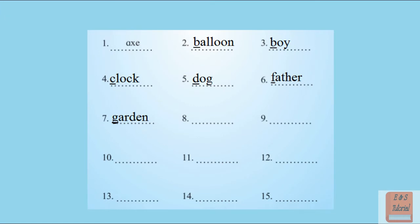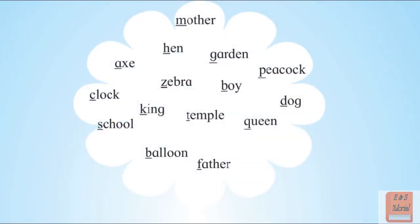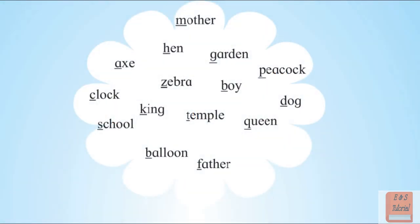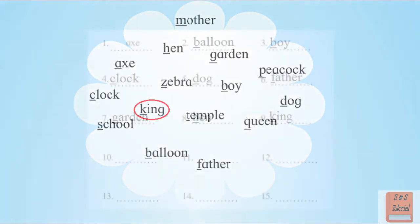After G, it's H. With H, the word that is given is hen. After H, we have I. There is no word with I. Then again, there is no word with J. So the next alphabet is K. With K, the word given is king.